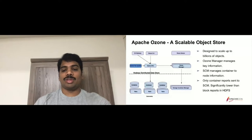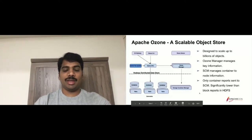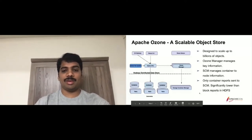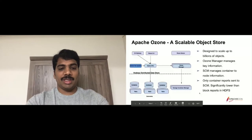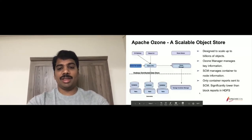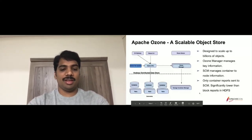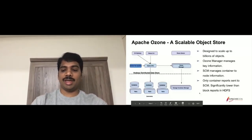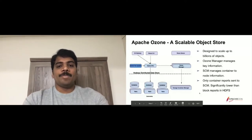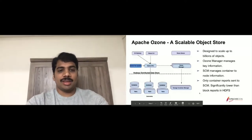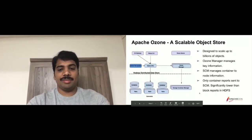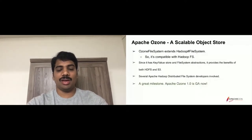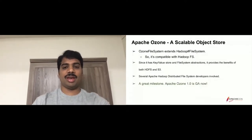Block reports are significantly reduced in Ozone, eliminating the bottleneck from the container reports perspective. As mentioned in a previous talk, a 'container' here is not a Docker or Kubernetes container — it's a logical name for a batch of blocks at the data node. Ozone has a file system layer, it's a key-value store, and the good news is that Ozone 1.0 GA is now out, so you can use it right away.